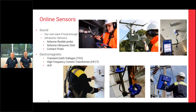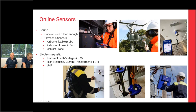For electromagnetic techniques, we use Transient Earth Voltage (TEV), which is a capacitive plate on the end of the ultrasonic instrument. We can use HFCTs which go around earth braids, particularly on cables, and UHF techniques for distance work — especially in high-voltage switchyards where localization using UHF is preferable. We have a UHF directional antenna shown in the bottom right picture. All of these techniques will give us the PRPD patterns we're discussing today.